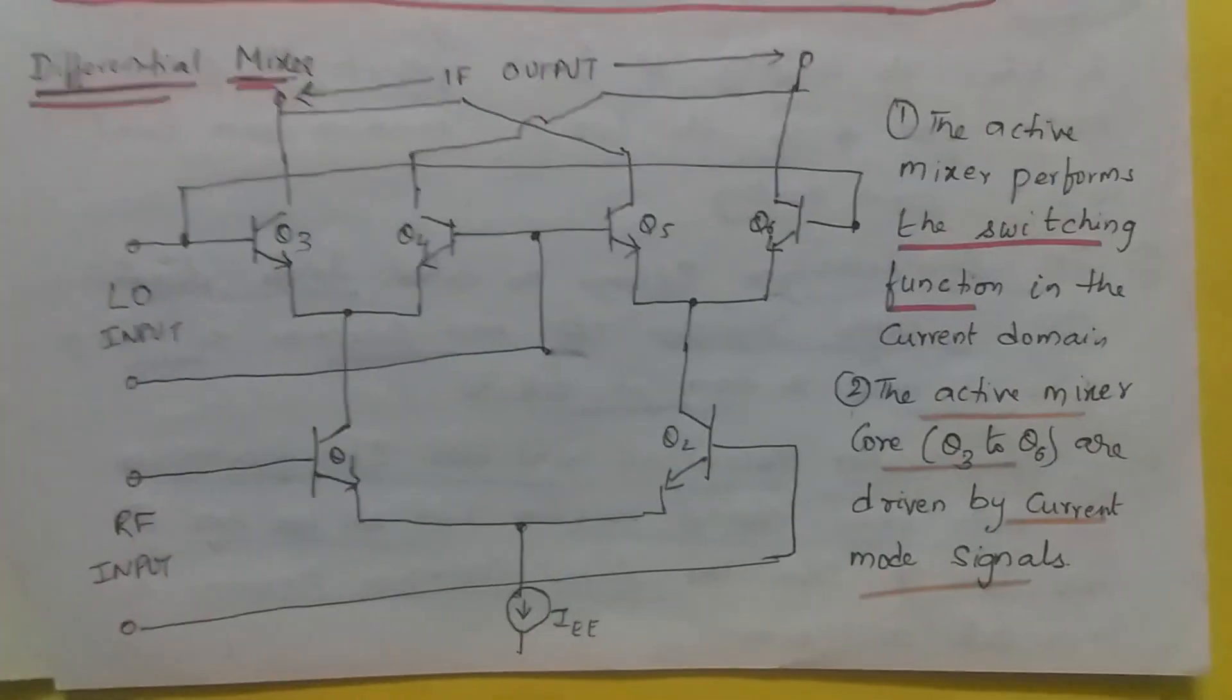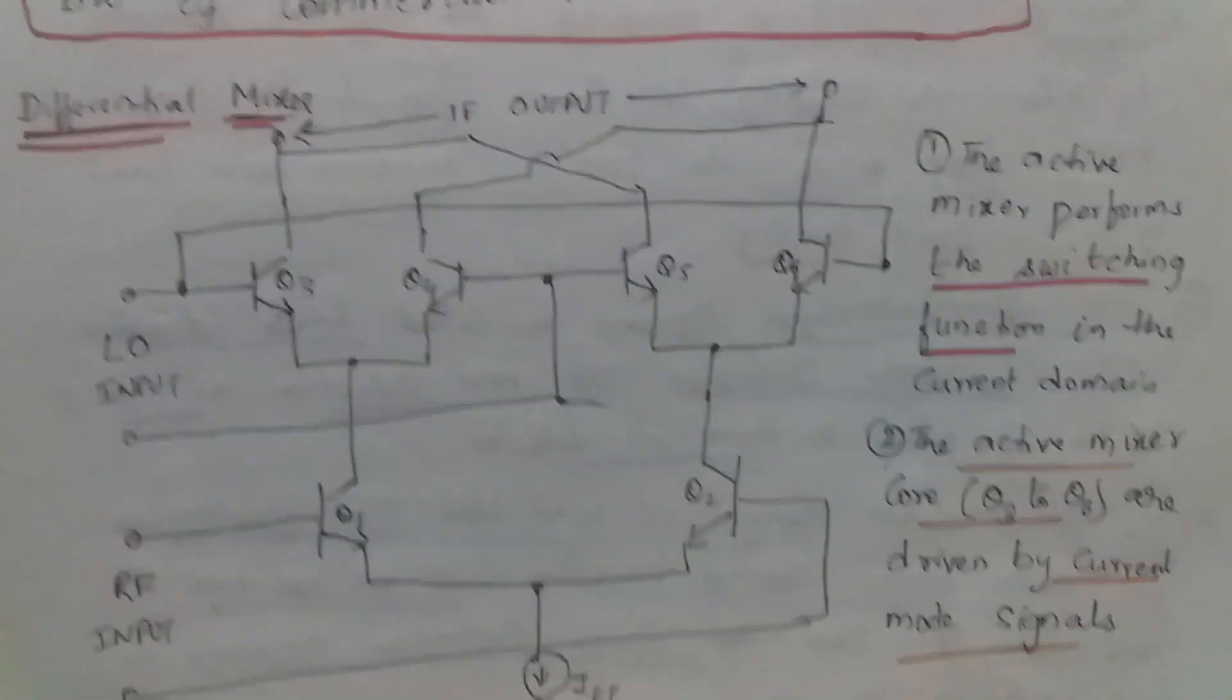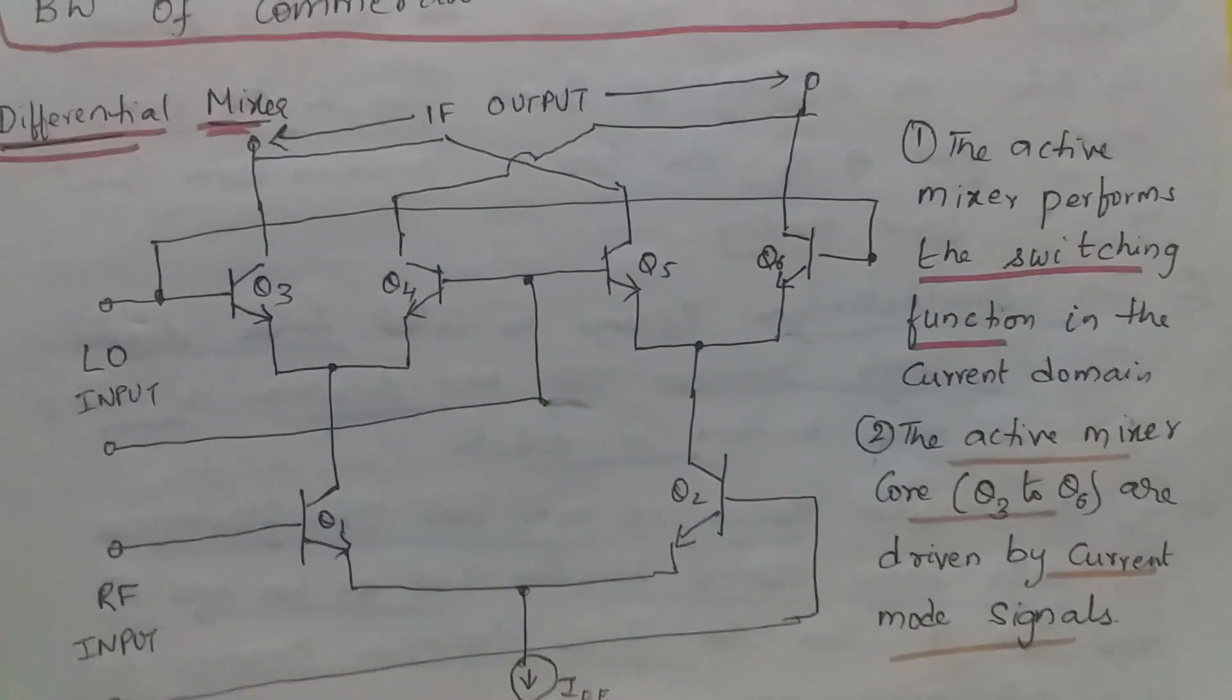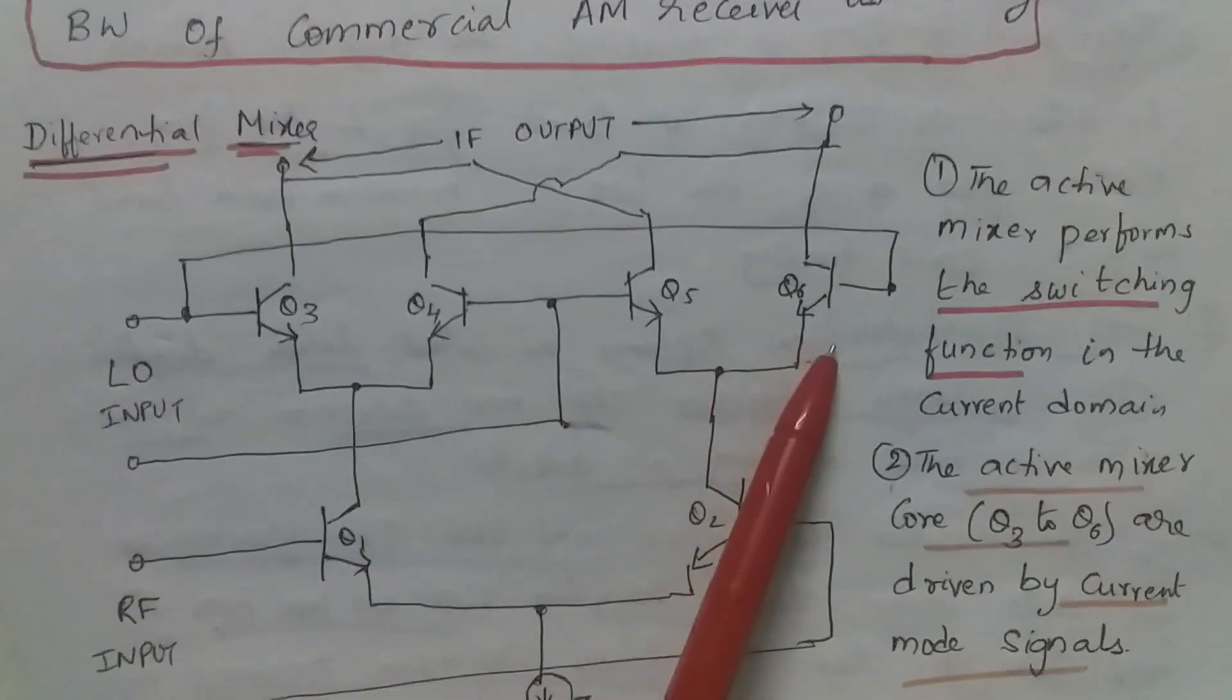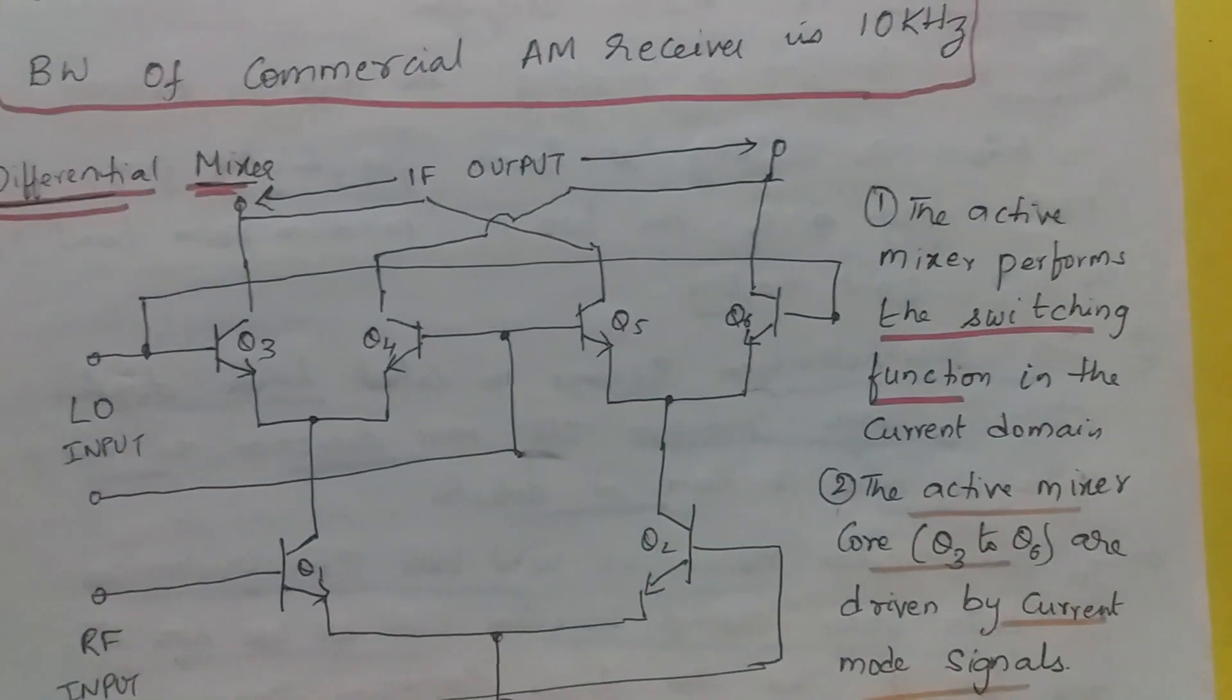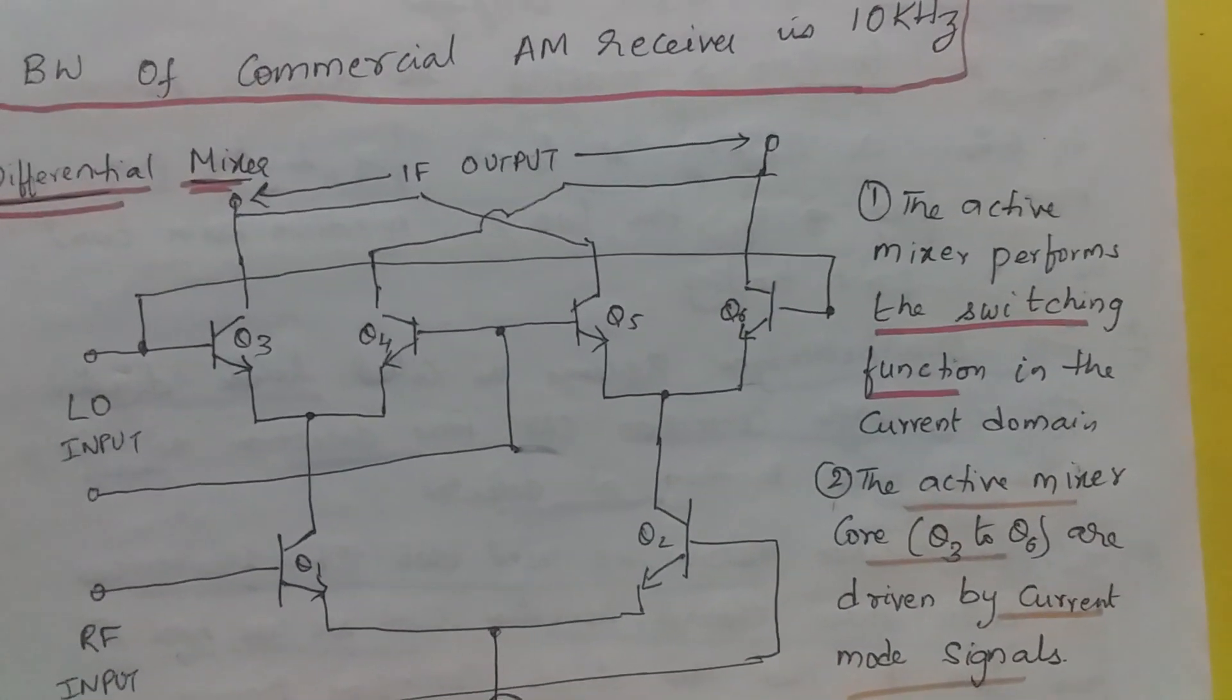Now let's discuss differential mixer. In differential mixer, the active mixer performs a switching function in current domain. The active mixer core is Q3 to Q6. Q3, Q4 is one differential stage. Q5, Q6 is one more. This is a differential amplifier.